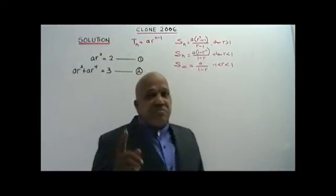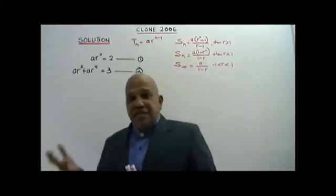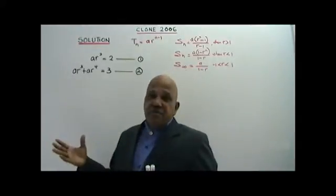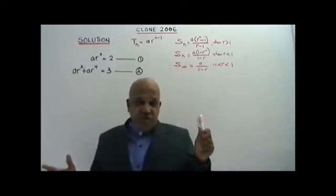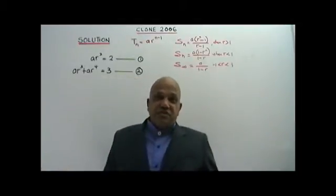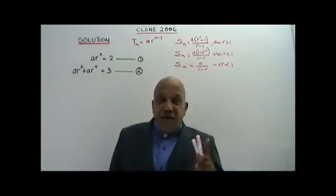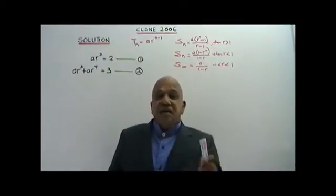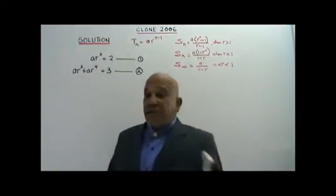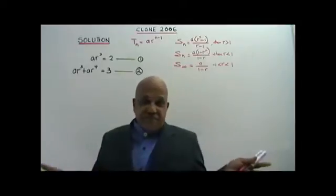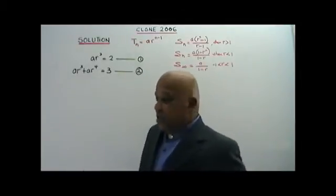But R cannot be equal to 0. Now, the engine room of Geometric Progression is the common ratio. How do we find the common ratio? The right term divided by the immediate left term. That is the common ratio.